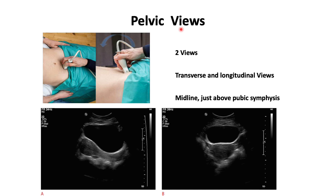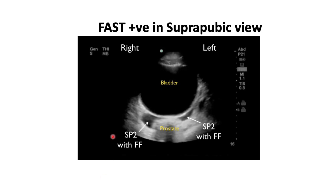The fourth view is the pelvic view, where we scan the bladder and look for free fluid around it. Unlike previous views where only one view was taken, in the pelvic scan we take both transverse and longitudinal views. The bladder is a pelvic structure, so you may need to direct the sound waves towards the pelvis, making the probe very flat close to the skin. In the suprapubic view, you can see anechoic fluid inside the bladder and anechoic structures just outside the bladder — in the context of trauma, this is blood and is considered FAST positive.